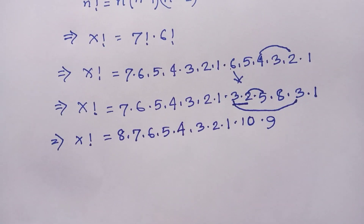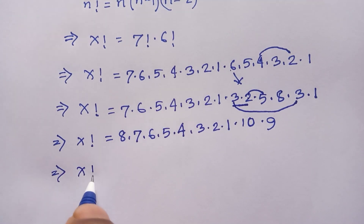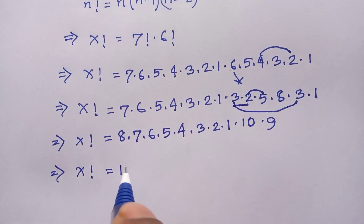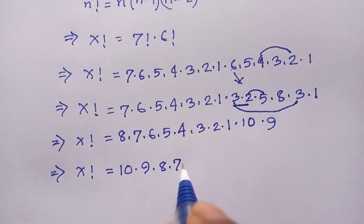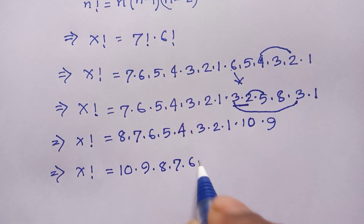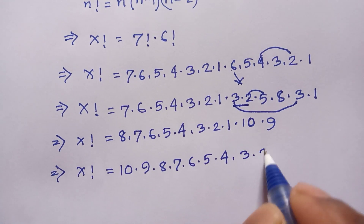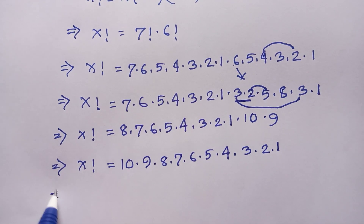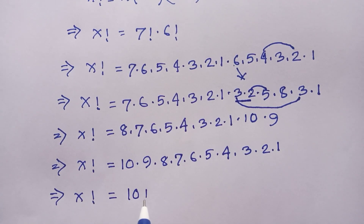Now, 2 times 5 equals 10 and 3 times 3 equals 9. So x factorial is equal to 10 times 9 times 8 times 7 times 6 times 5 times 4 times 3 times 2 times 1. Since these are all positive integers, we can write x factorial is equal to 10 factorial.